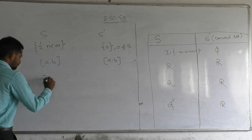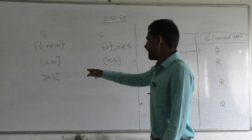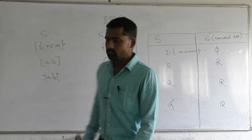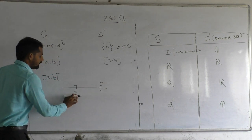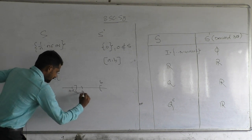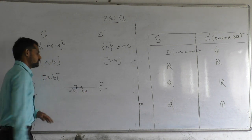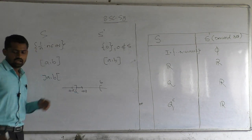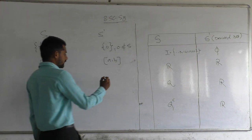Now consider the open interval (a, b). Note that a and b do not belong to the set, but a and b are also limit points of this set. Because if we take a and make a neighborhood (a - δ, a + δ), this neighborhood must contain infinitely many points of the open interval (a, b). Therefore both endpoints a and b are limit points, so the derived set of (a, b) is the closed interval [a, b].